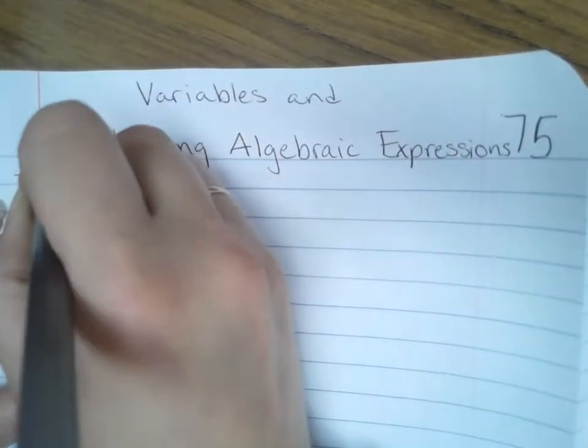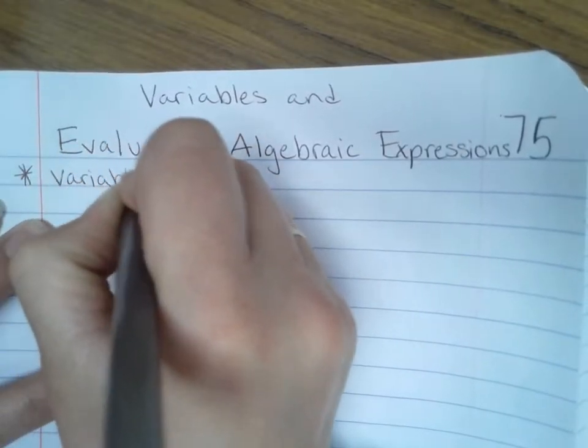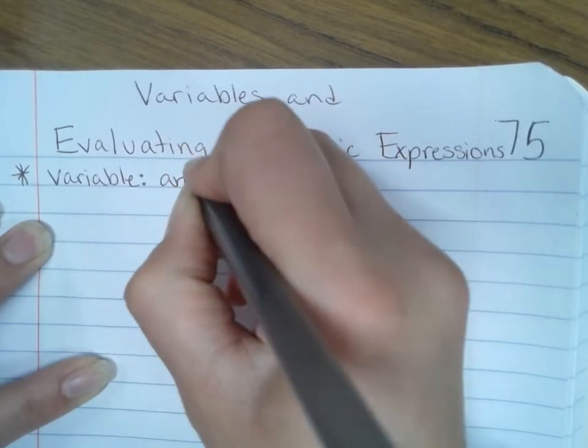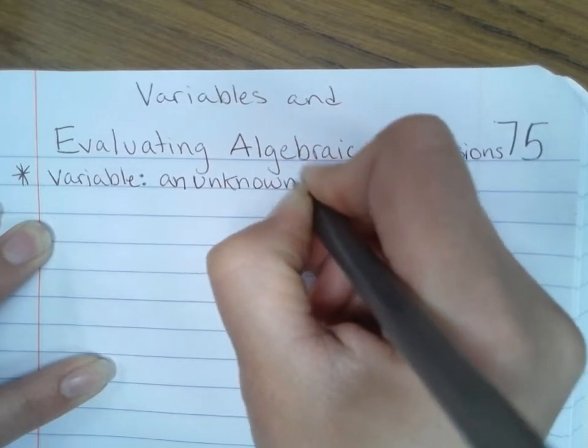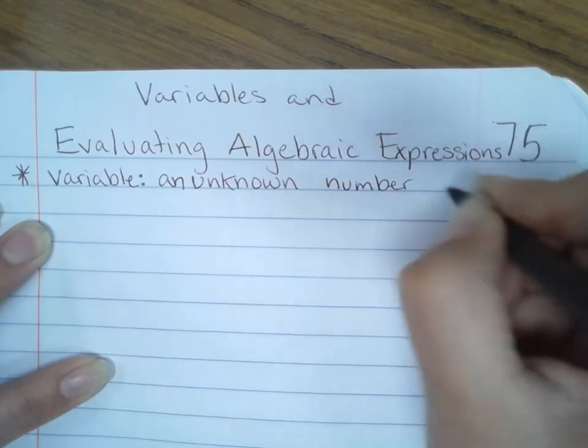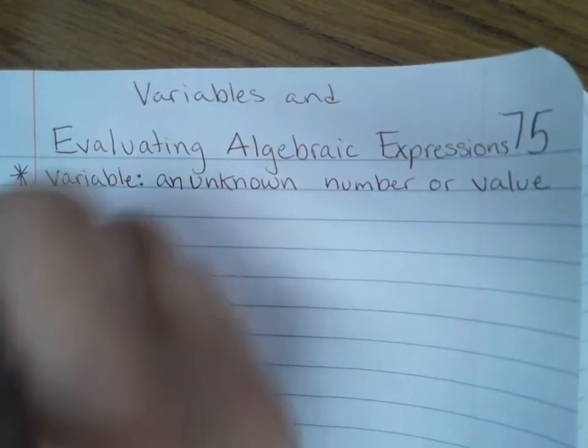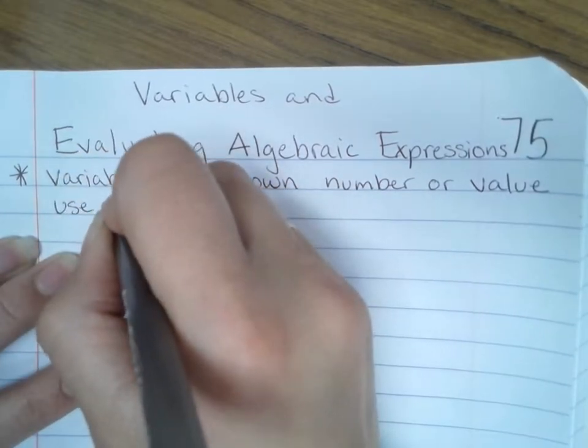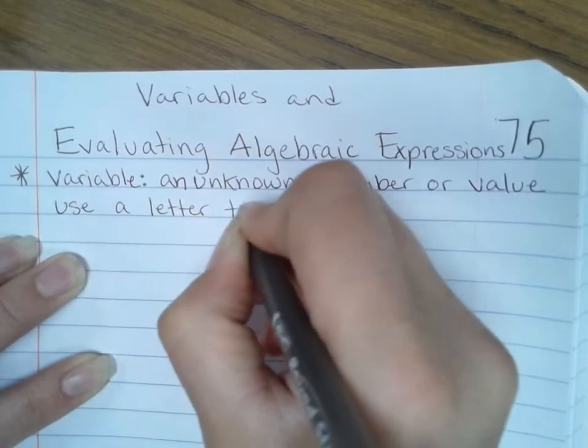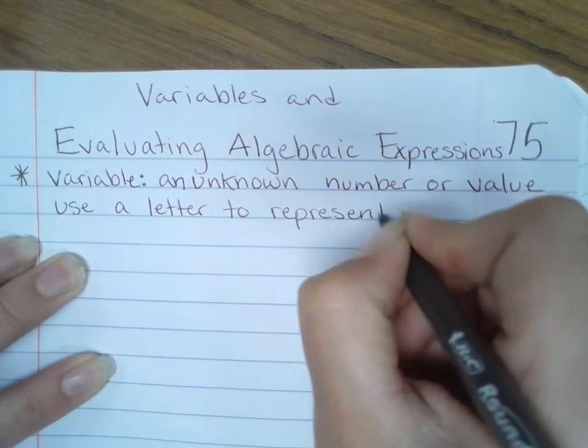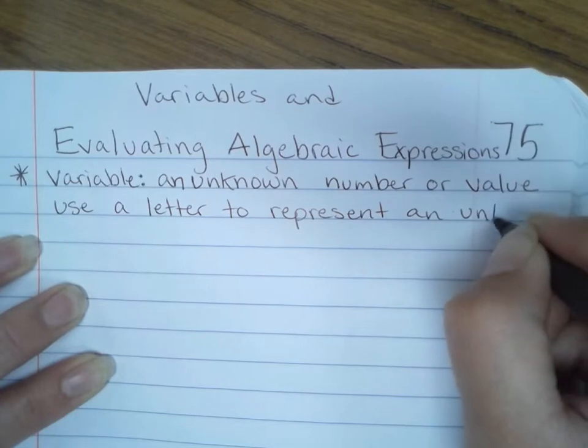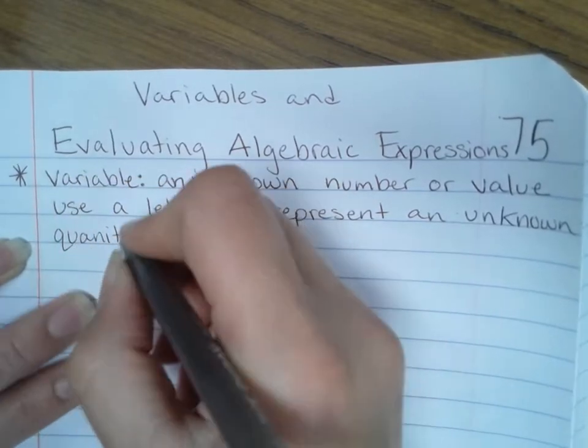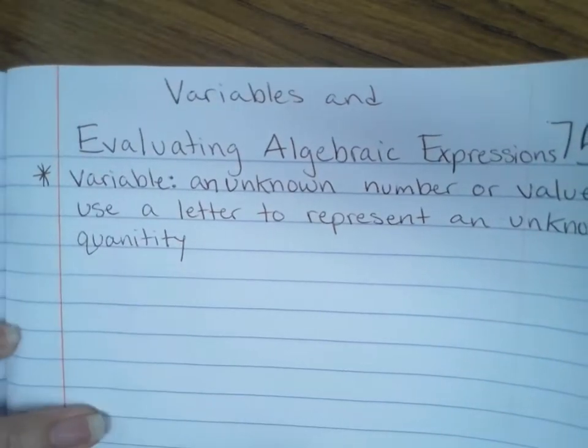First of all, we need to know what a variable is. A variable is an unknown number or a value. We use a letter to represent an unknown quantity. We know it exists, we just don't know how much there is.